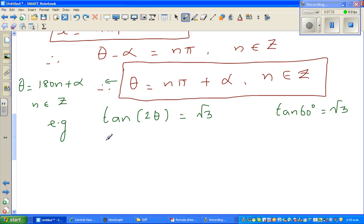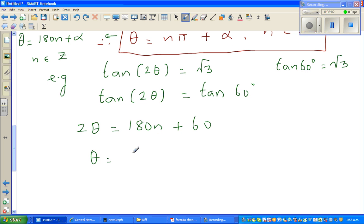So I can say tan 2θ is equal to tan 60. So using this formula, I can say 2θ is equal to 180n plus α. What's your α here? α is 60. So now dividing by 2, θ is 180 divided by 2 is 90. So it's 90n plus 30. So this is your general solution.